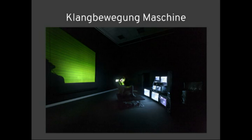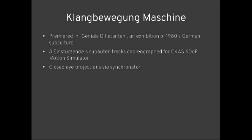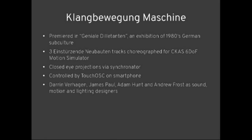This is another one we've done. It's called Klangbewegen Machine, part of an exhibition called Geniale Dilettanten — an exhibition of 1980s German subculture at RMIT Gallery at the moment. We choreographed three Einstürzende Neubauten tracks for a motion simulator. You sit in the chair on top of the motion simulator, there's a projector shining colours straight into your face — you've got to have your eyes closed for it, it's pretty awesome. We control it by TouchOSC on a smartphone. Darren Bahagen, James Paul, Adam Hunt, and Andrew Frost did the sound, motion and lighting. Stuart McFarlane did industrial design, and I did the programming. If you're in Melbourne later this month, it's going to be part of White Night, then it moves up to Sydney for Ambush in March.